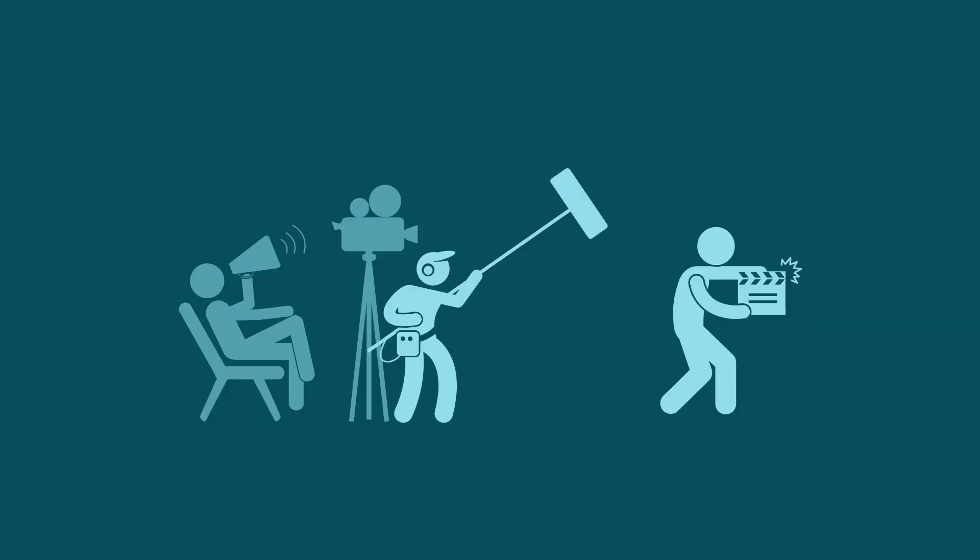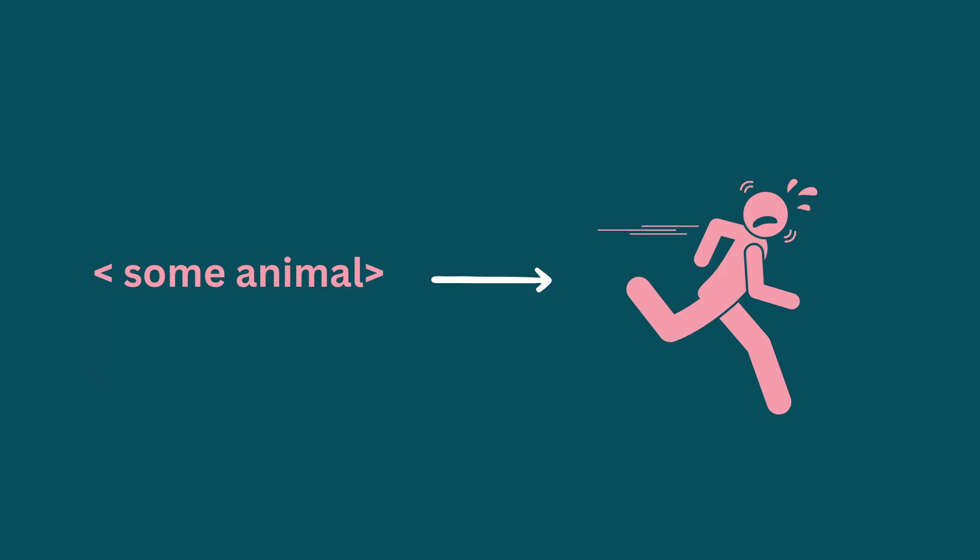To illustrate how this works, I'm going to be stealing an example from this book, Deep Learning: A Visual Approach by Andrew Glasner. Highly recommend. I really like this example because it's very fun and goofy and it gets the point across very well. Suppose you are an animal wrangler on a movie set, and right now you're filming a scary scene where the main character is being chased by an animal.